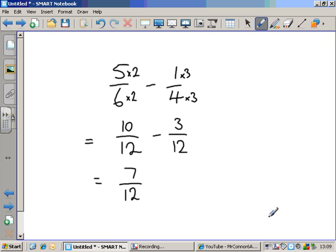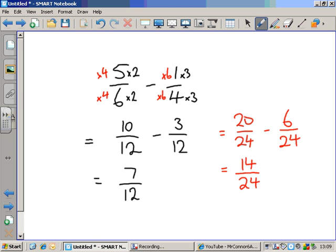How about if I'd found a bigger common denominator, say 24? Well, let's just work it through to show you. It doesn't make a huge difference. Six times four is 24. So five times four will be 20. And four times six is 24. So one times six is six. Twenty minus six is 14. 14 over 24. Can be simplified because they're both even numbers. Half them both gives me 7 over 12. And that was the answer I got over here as well. Not a problem, again, if you use a higher common denominator as long as you make sure that you simplify your answer.